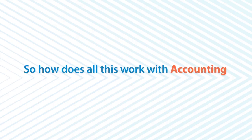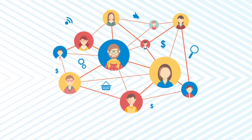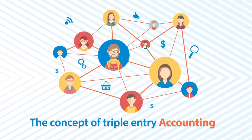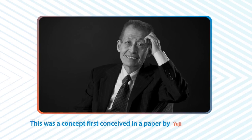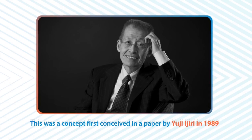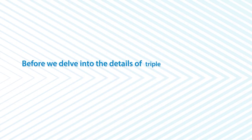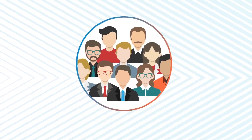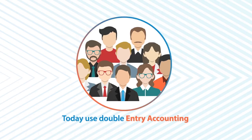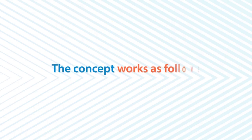So how does all this work with accounting? Using the blockchain, we can introduce the concept of triple entry accounting. This was a concept first conceived in a paper by Yuji Ejiri in 1989. Before we delve into the details of triple entry accounting, let's first understand how things work currently. The vast majority of accounting systems today use double entry accounting.